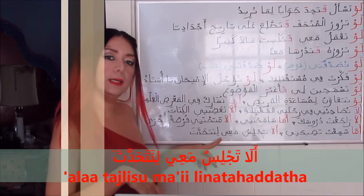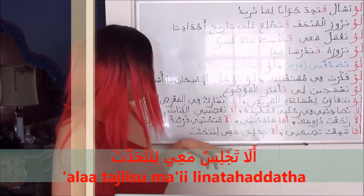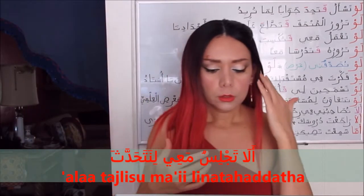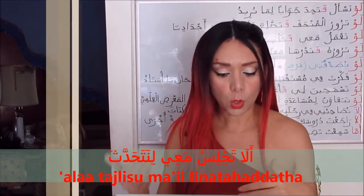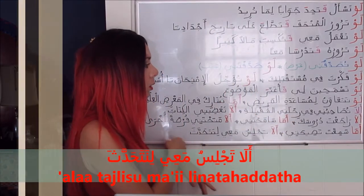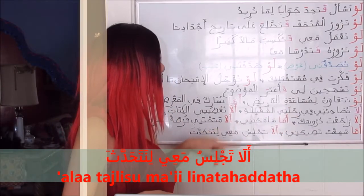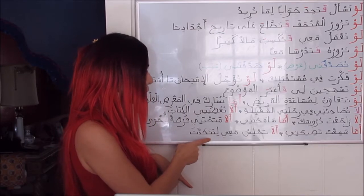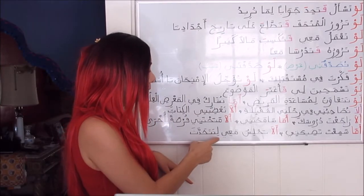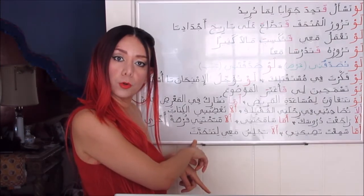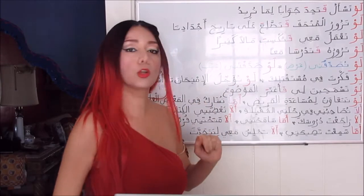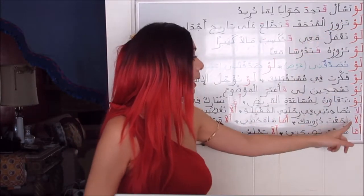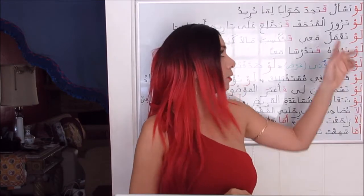ألا تجلس معي لنتحدث — جلسَ means 'to sit', تحدّثَ means 'to talk or chat'. Would you sit with me to talk? لنتحدث — after لِ we use the imperfect subjunctive. This prefix affects the mood of the following imperfect verb. But لو، ألا، أما do not affect the mood of the imperfect verbs.